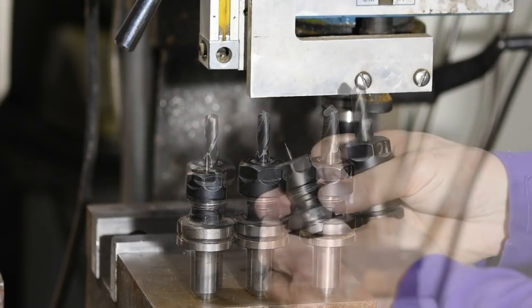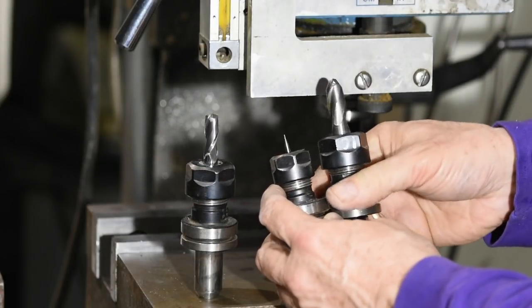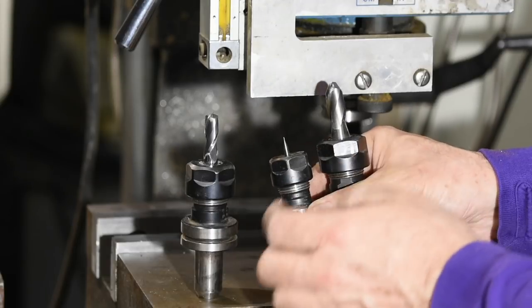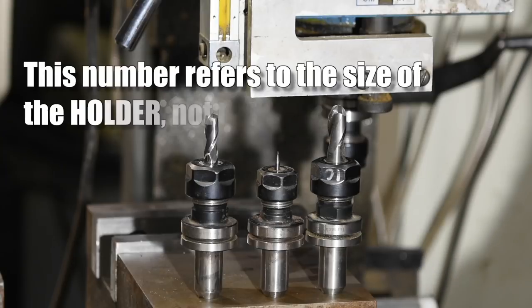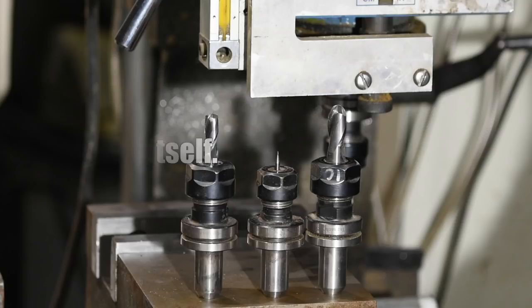ERs come in a variety of sizes: 16s, 20s, 32s, and so on. As you can see here, this ER-16 is a lot smaller than this ER-20. Each number accommodates a wide range of sizes, with the numbers changing as they accommodate larger and larger tools.